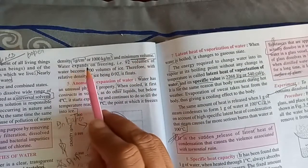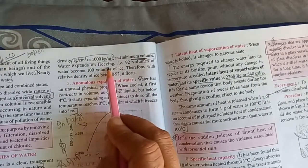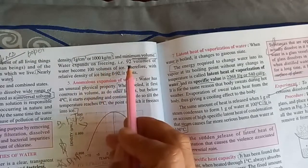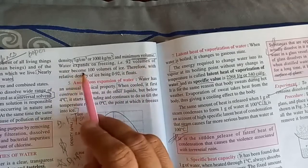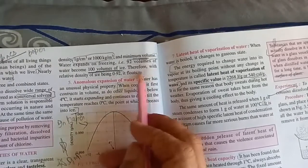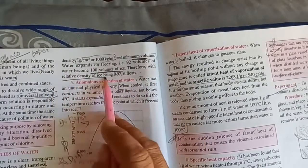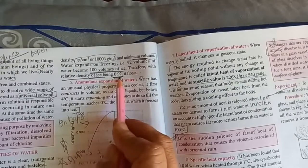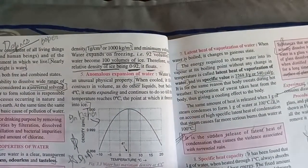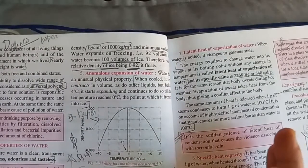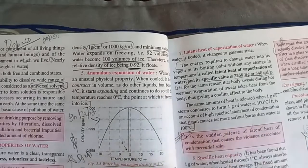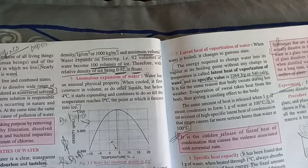Water expands on freezing. 92 volume of water becomes 100 volume of ice. Therefore, with the relative density of ice being 0.92, that's why it floats.